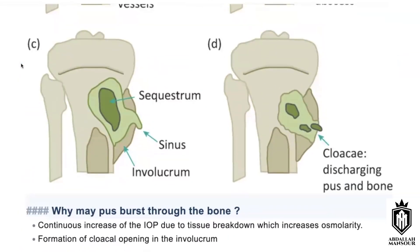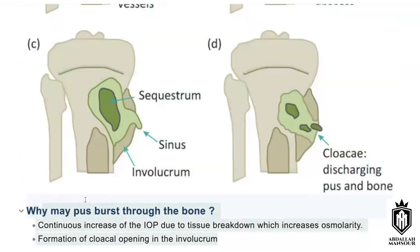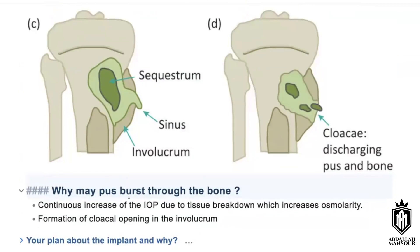Can you define involucrum? Examiner: First, you started by repeating the question — that's wasting time. Second, you ended by repeating the question again. You said: 'the pus may burst through the bone due to increase in intraosseous pressure forming a cortical opening into the involucrum, and this will lead to the pus being burst through the bone.' Just say: due to increase in intraosseous pressure. Be direct.